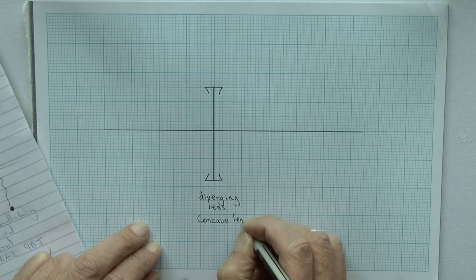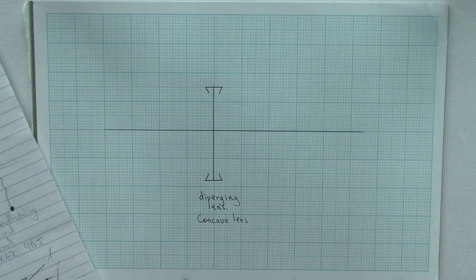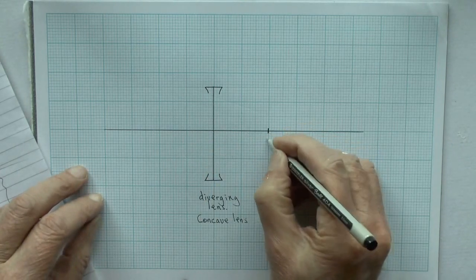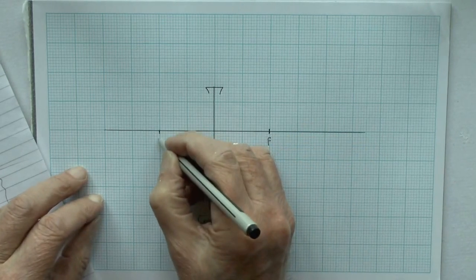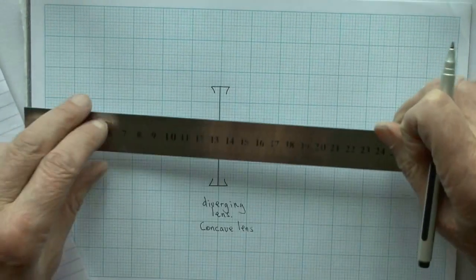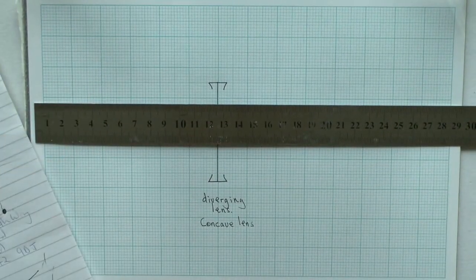Now, we need to draw in a focal point. The focal point is not where the light is brought together, but it is where the light seems to be spread out from, as I'll just show you in a moment.